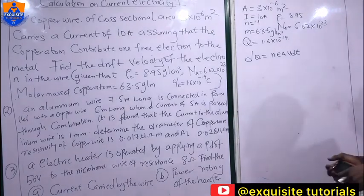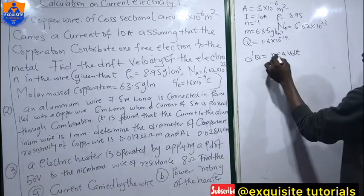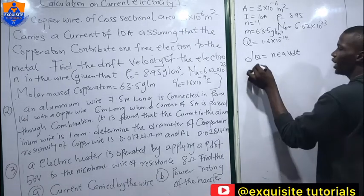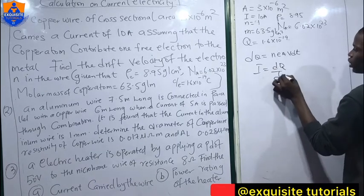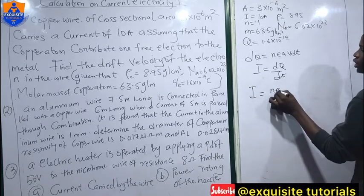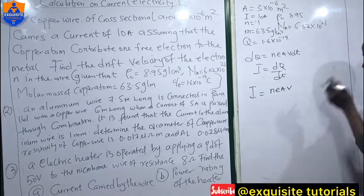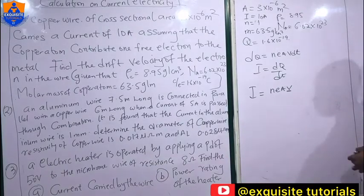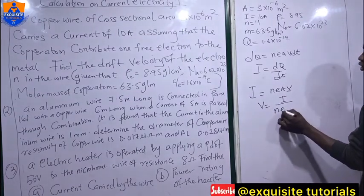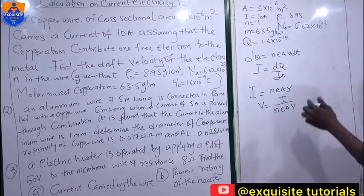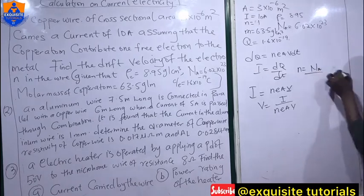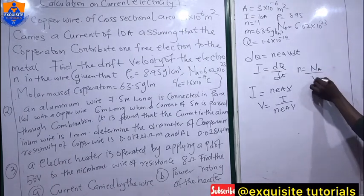Remember that dq = neAv·dt. From that, our current I is equal to dq/dt, so I = neAv. Now, what we are interested in is the velocity, so v = I/(neA).